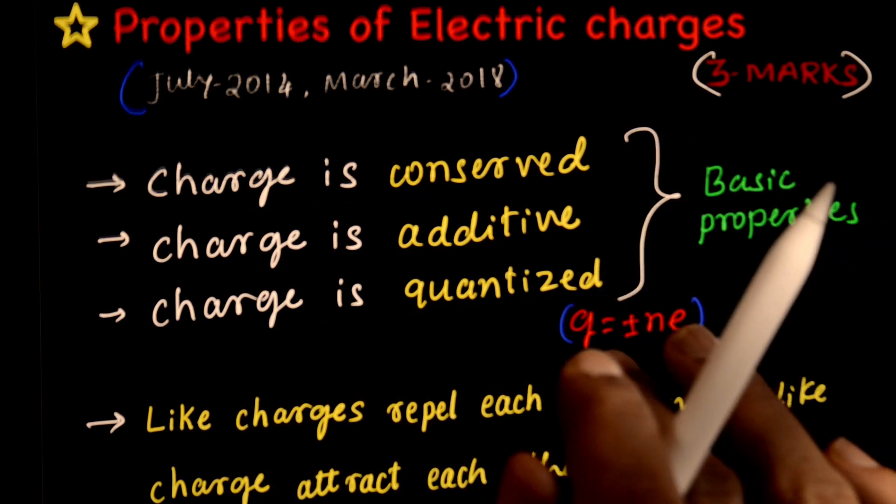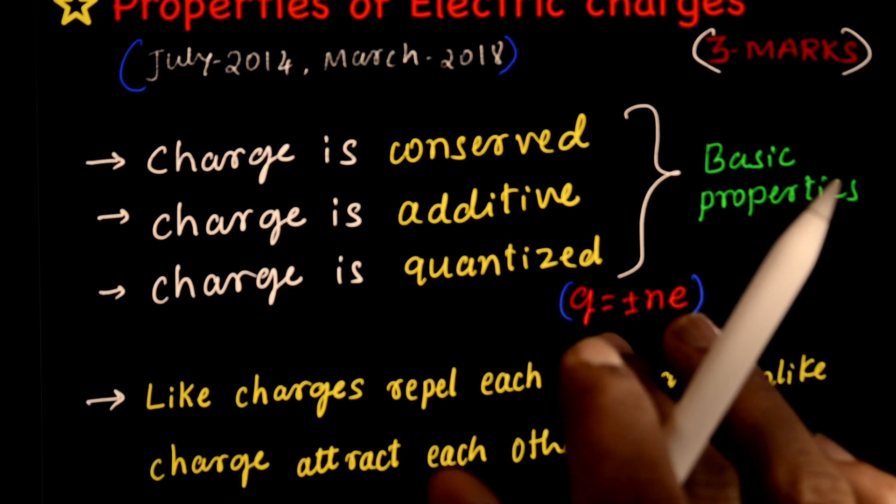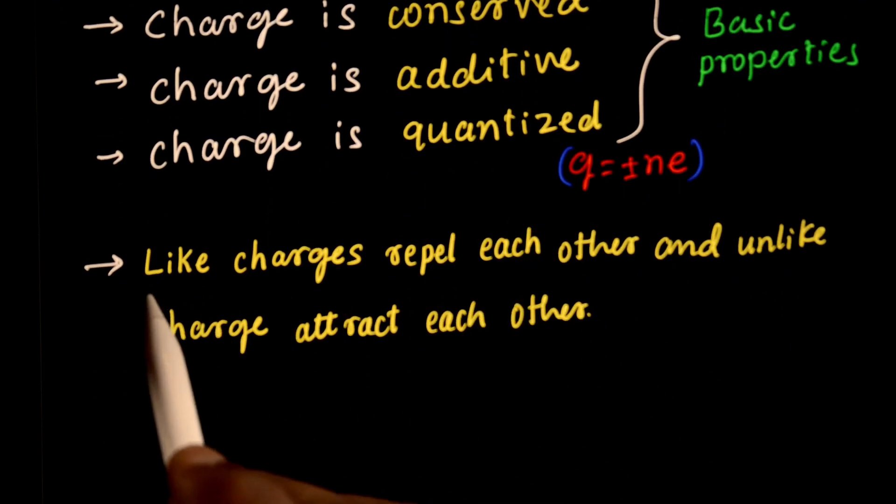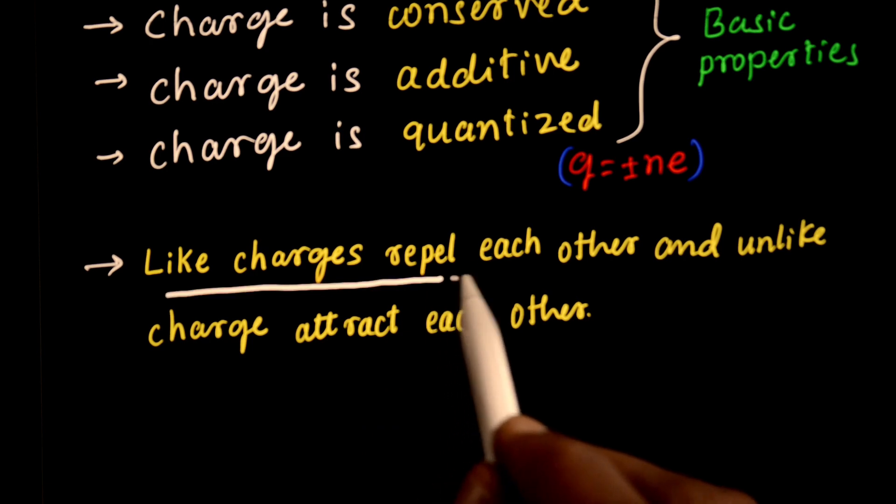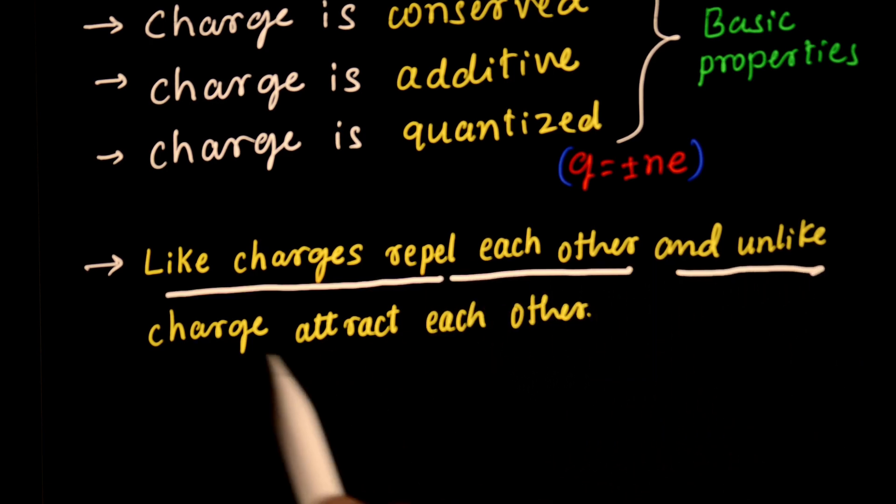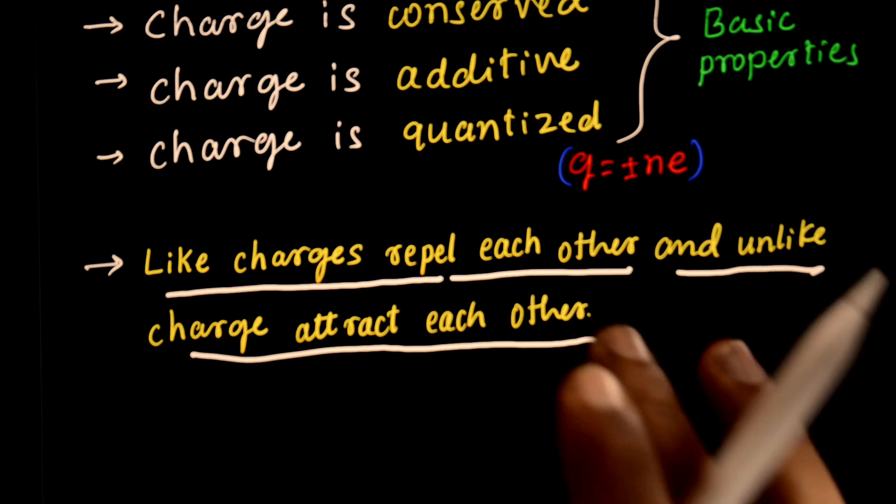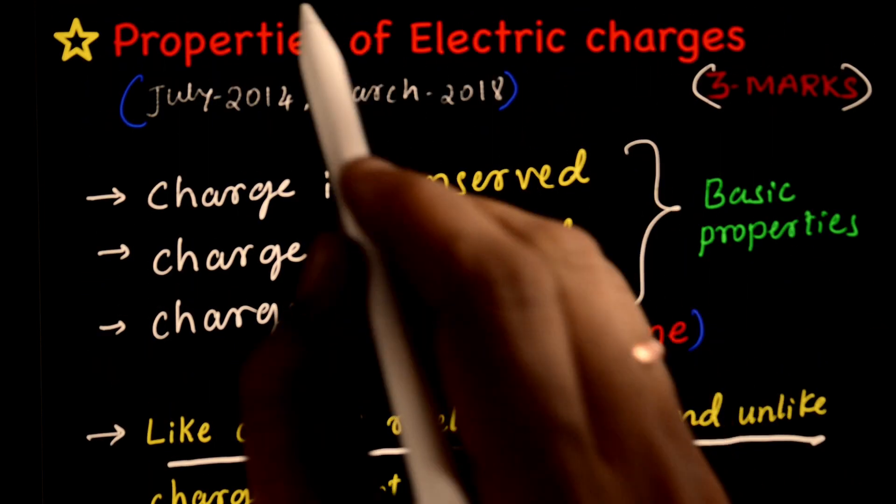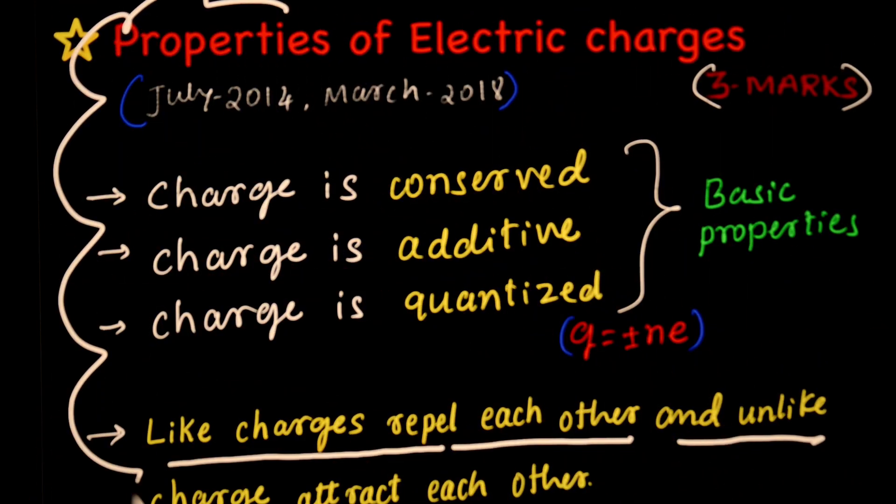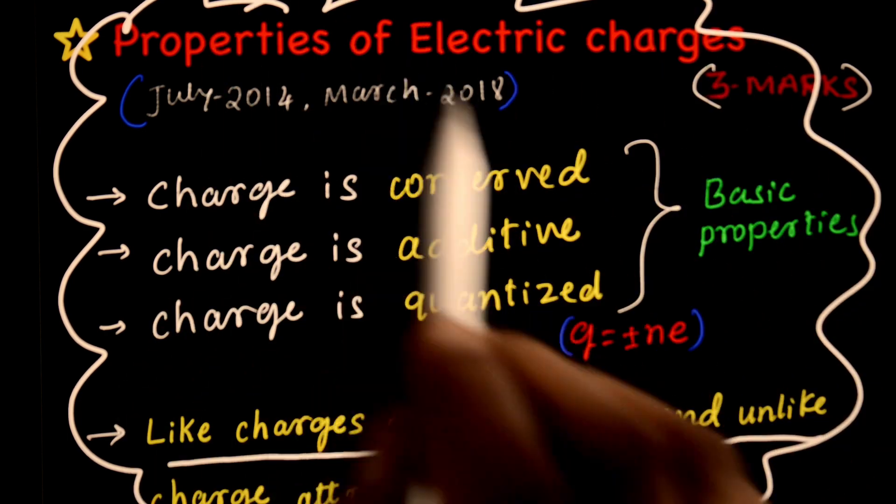This much is enough: charge is conserved, charge is additive, charge is quantized, and this formula. If you add: like charges repel each other and unlike charges attract each other. This is enough for 3 marks. That is more than enough.